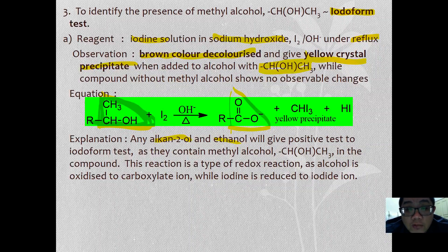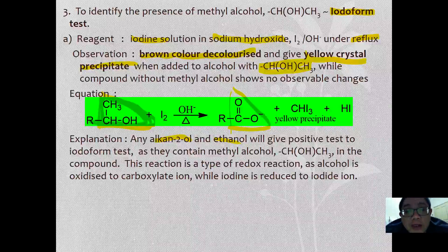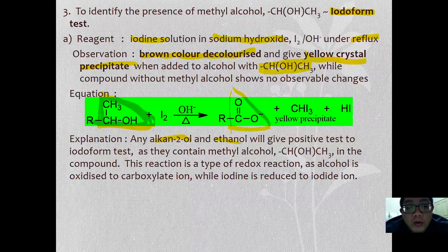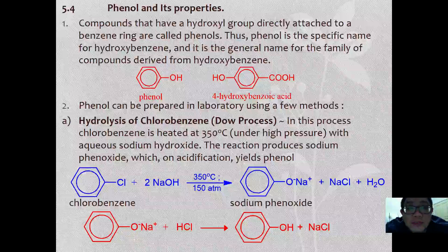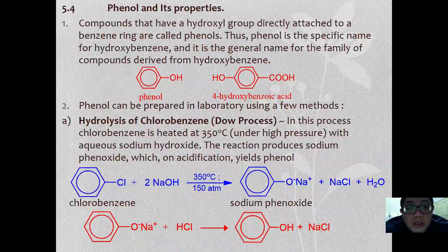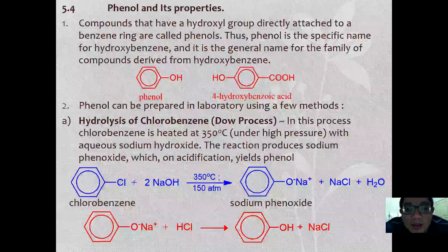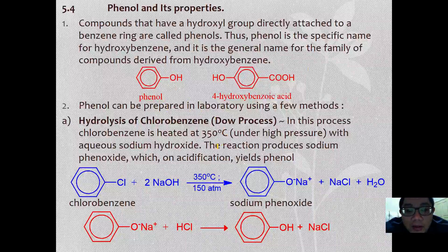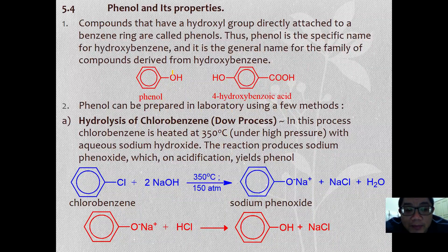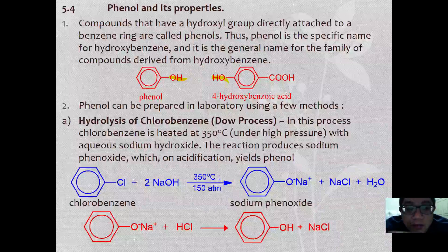That is all for the chemical reactions of alcohol. Next, we are going to look at the special chemical properties of phenols. A compound with a hydroxyl group directly attached to a benzene ring is called phenol — a specific name for hydroxybenzene or the general name of the family of compounds derived from hydroxybenzene. Examples include phenol and 4-hydroxyphenol.